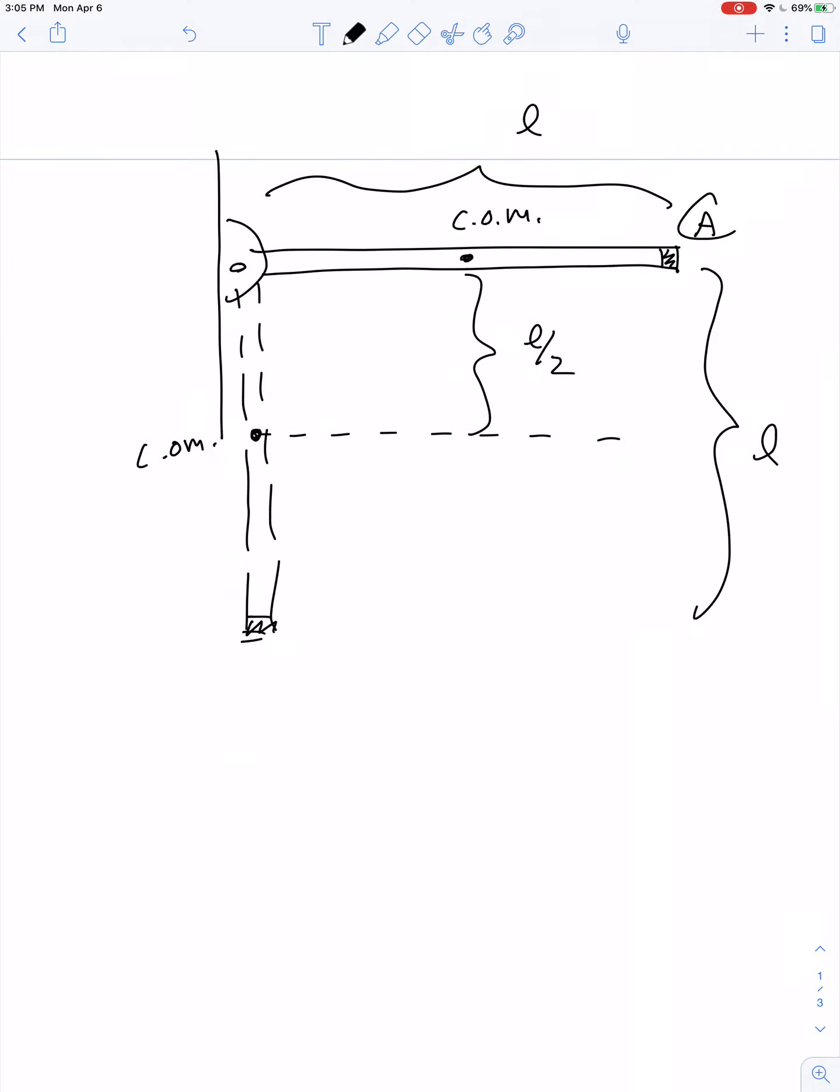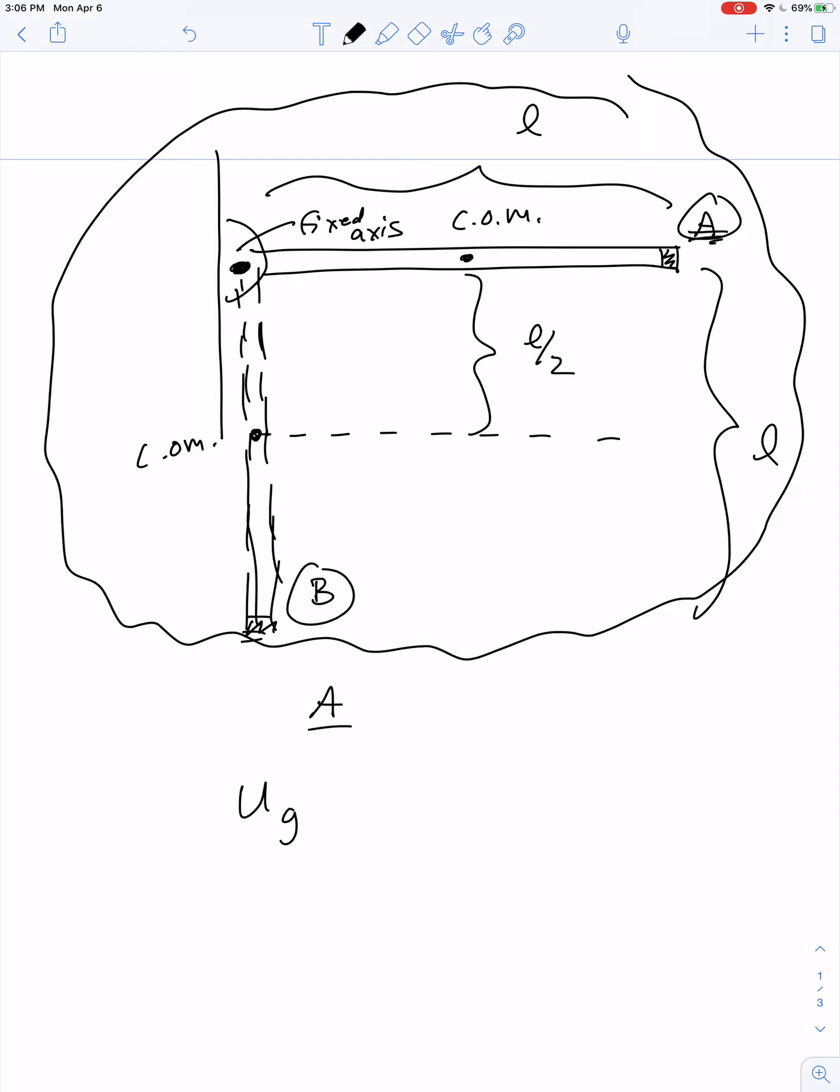So the energy of this beam when it's in point A is gravitational potential energy. And by the time it gets to point B, this whole system has not translated through space. This is just a system of an object that's rotating about a fixed axis. So the gravitational potential energy when the beam is in position A has been converted into rotational kinetic energy when it's in position B.